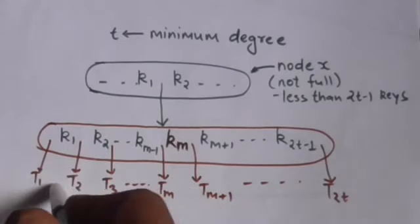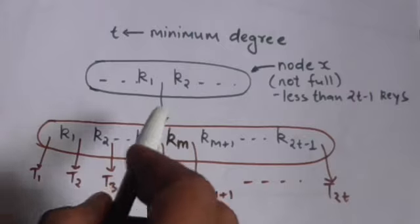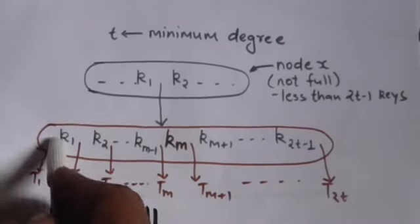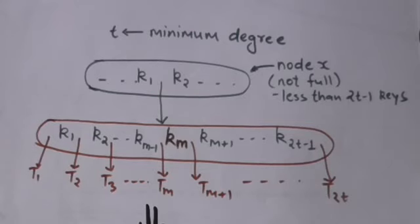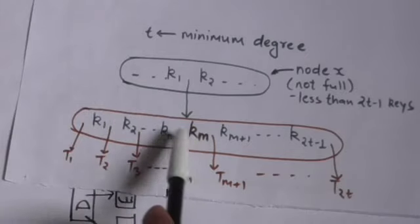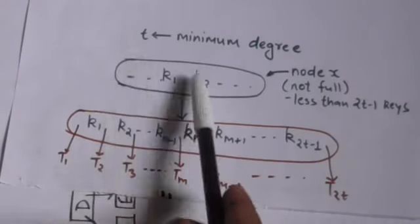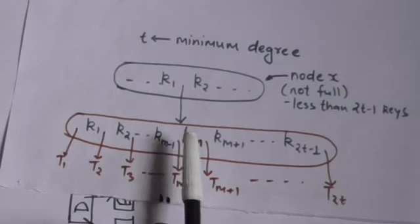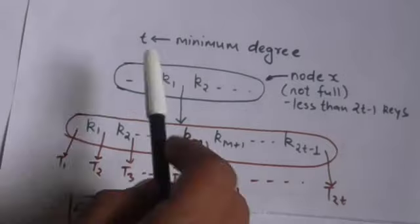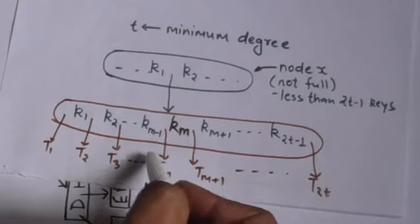If this full child node is not a leaf, it will have 2t number of children, because it is full and has 2t minus 1 number of keys. Now let the key at the mid of this full node be km. To split this full node, key km will move to the parent node between keys k1 and k2.